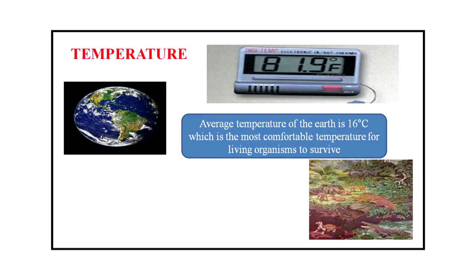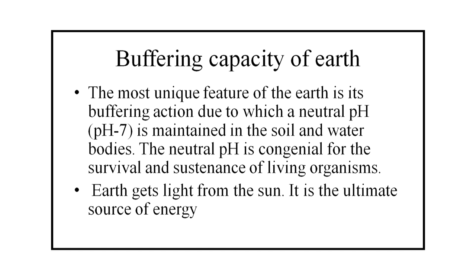The next condition on Earth for sustaining life is temperature. The average temperature of the Earth is 16 degrees centigrade, which is the most comfortable temperature for living organisms to survive. The last condition for sustaining life on Earth is buffering capacity. The most unique feature of the Earth is its buffering action, due to which a neutral pH of 7 is maintained in the soil and water bodies. This neutral pH is congenial for the survival of living organisms. Earth gets light from the sun, which is the ultimate source of energy.